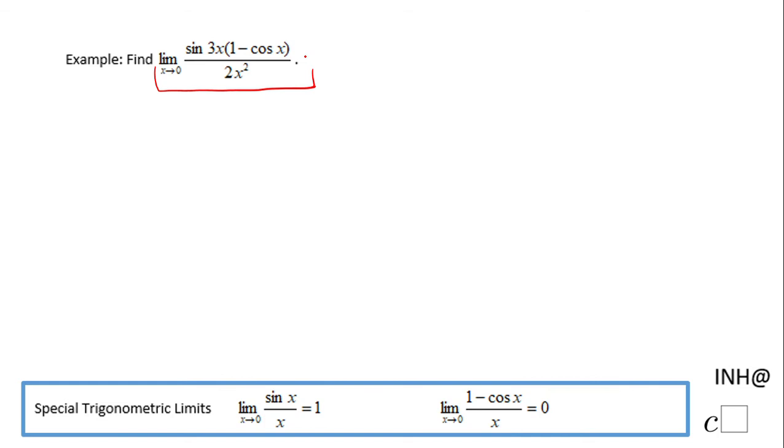The first thing you want to do when evaluating a limit is to take the value you see here and plug it in. If you do that in this case, you're going to end up with 0 over 0, which is an undefined form. Therefore, we have to use some other methods to find this limit.